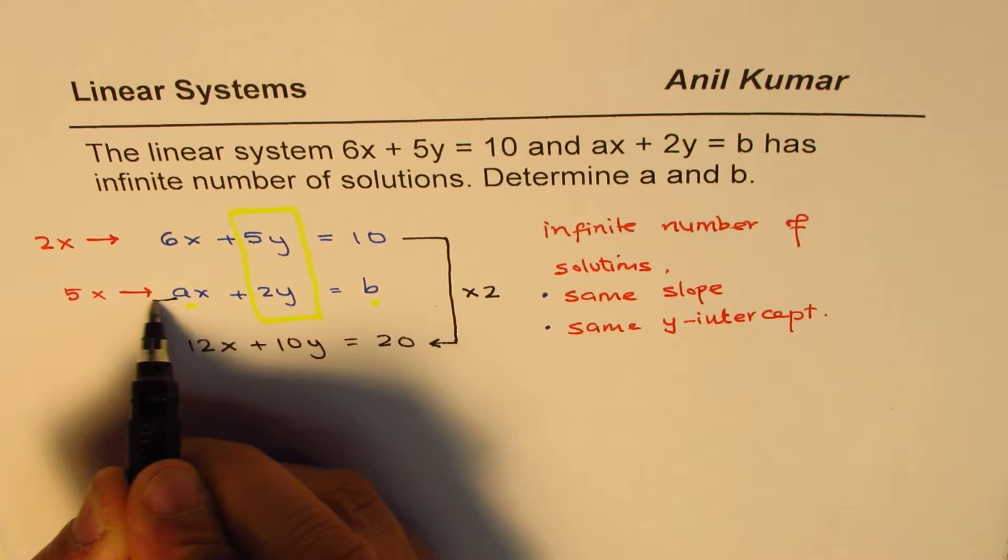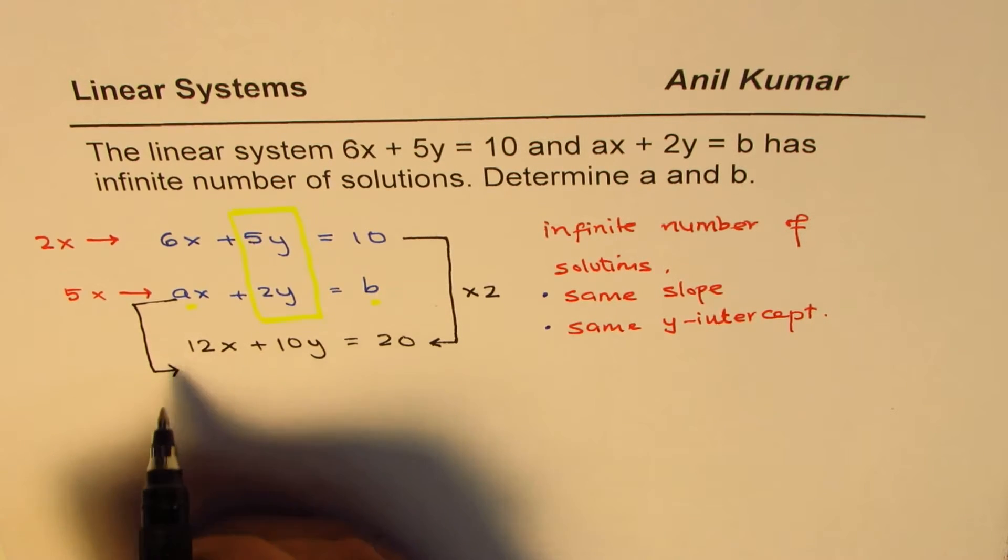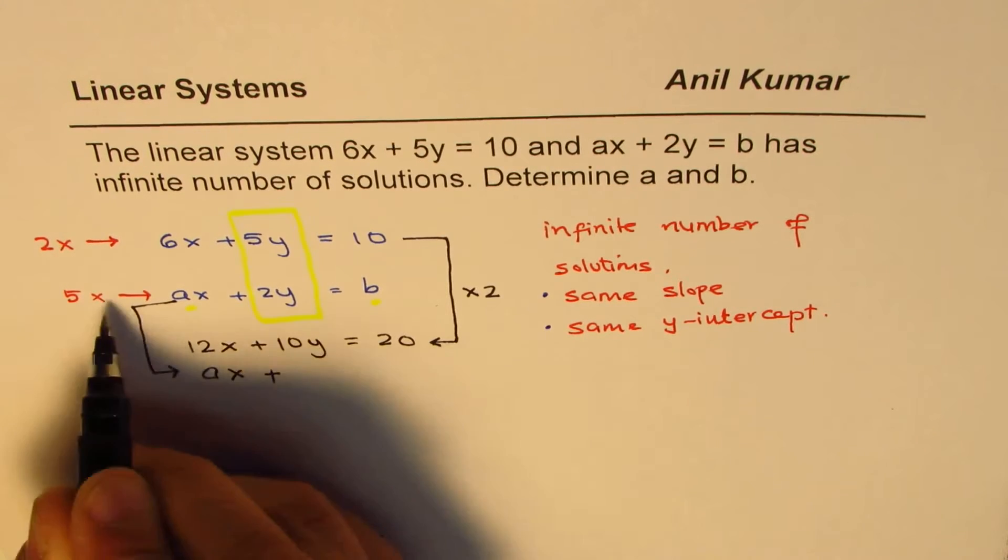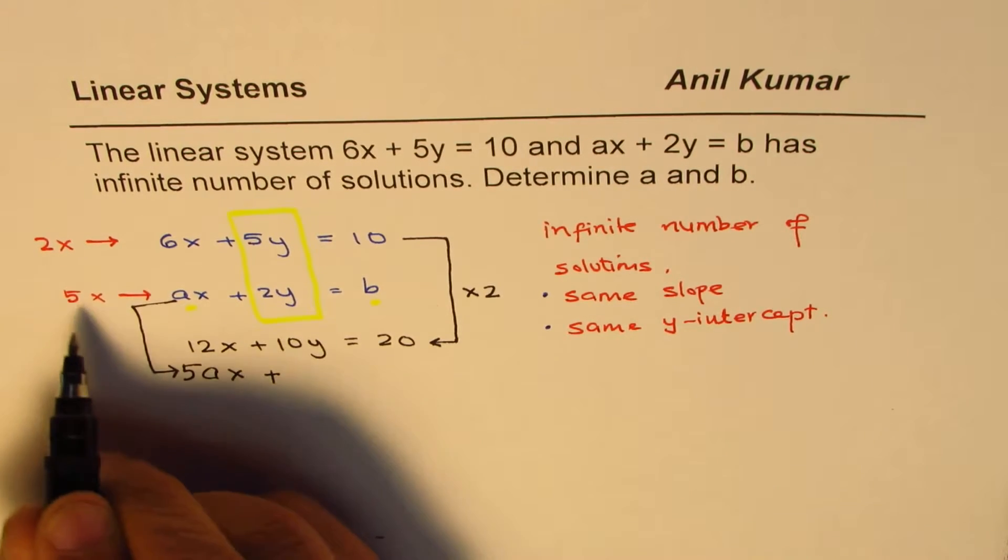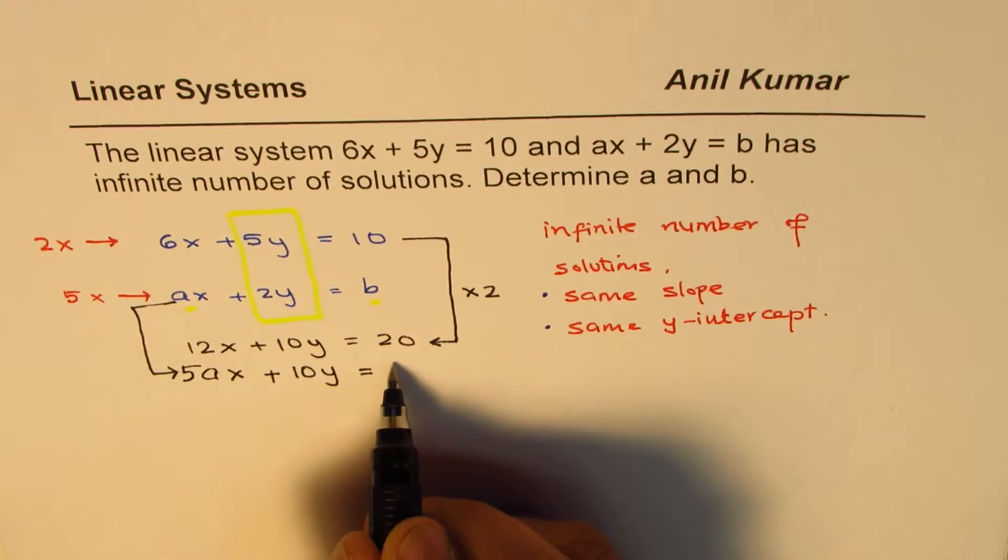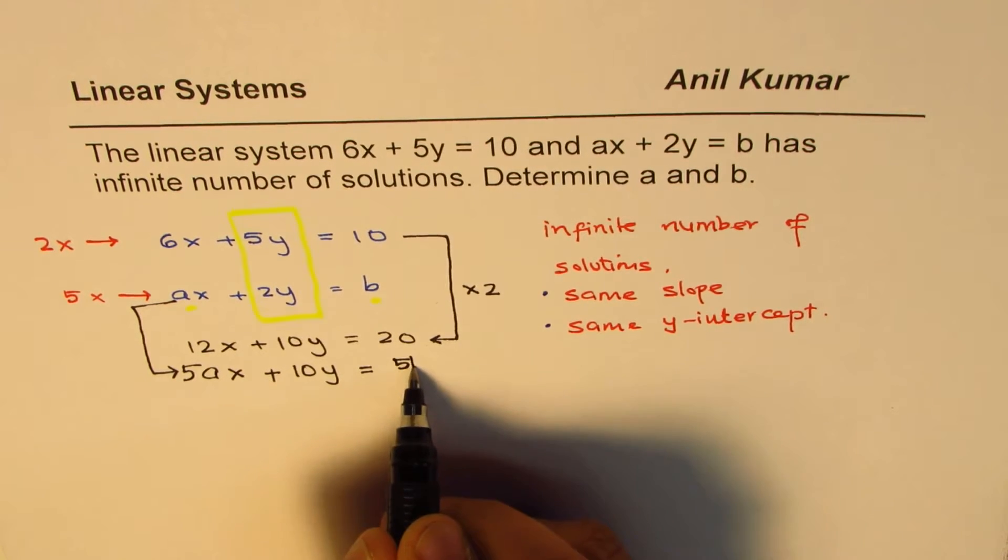Now if I multiply this equation by five, then what do I get? I get ax, five, five ax. We are multiplying by five, five ax plus 10y equals five b.